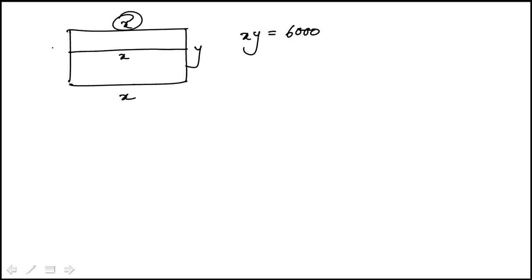This dimension will be the same as that. This is y. So the perimeter of the fence is 3x plus 2y. This is what we need to minimize.